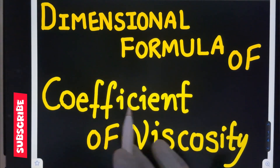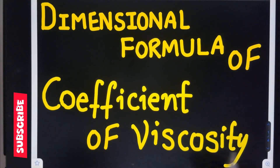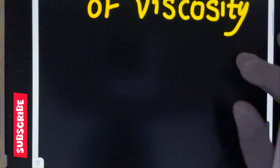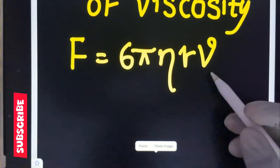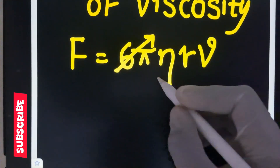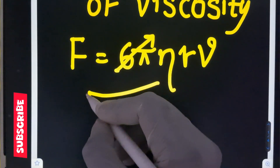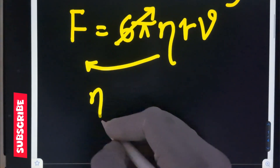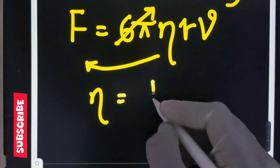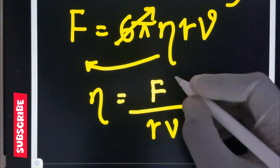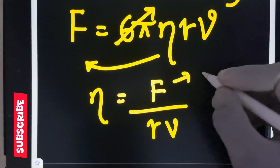To find the coefficient of viscosity, the formula is F equals 6 pi eta r v. After rearrangement, eta is equals to force F divided by radius r and velocity v.